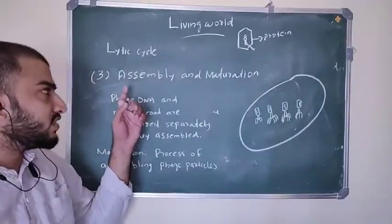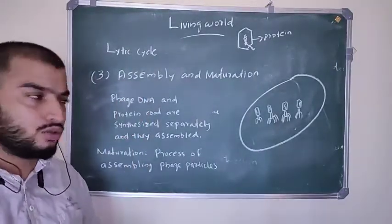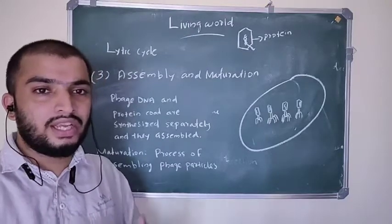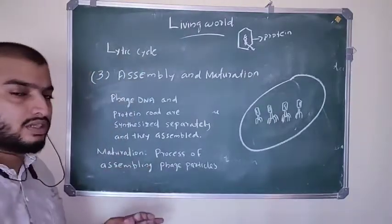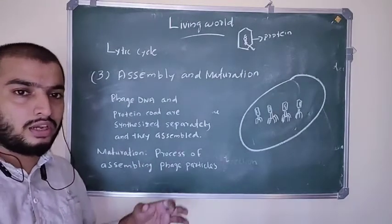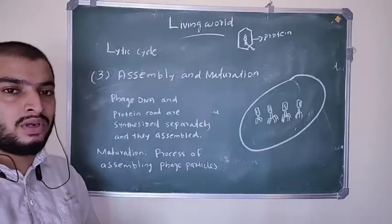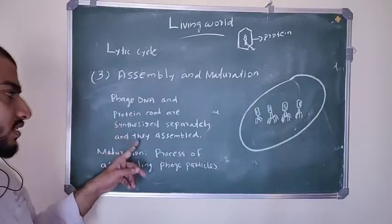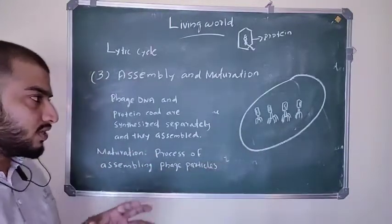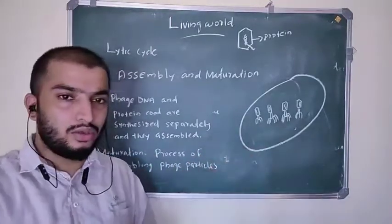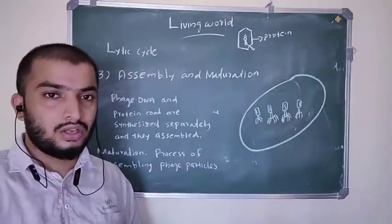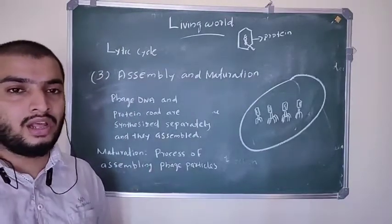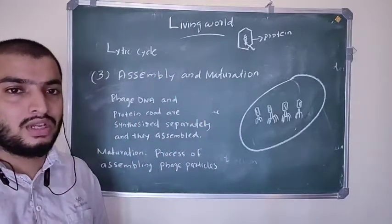The fourth step is assembly and maturation. In the previous synthesis step, protein coat and DNA materials were synthesized. Now in assembly and maturation, all these phage particles — DNA and protein coat — are assembled into a complete phage particle. The phage DNA and protein coat are synthesized separately and then assembled. This assembling of all phage particles into a complete bacteriophage is called maturation.